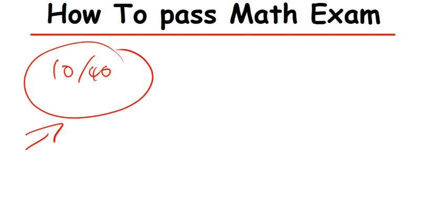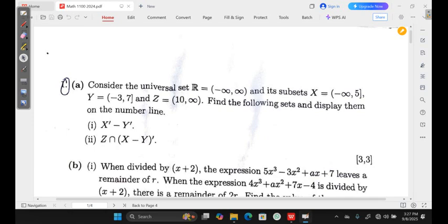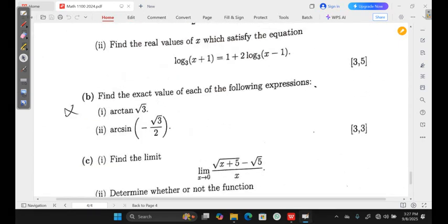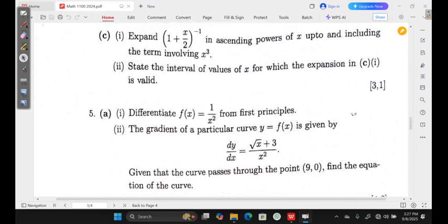I'm going to show you using an actual past year paper. Now, let's say you have a CA of 10 out of 40 and you are going into the exam — you are depressed, you feel like nothing is going to happen. But it is possible. So, using this paper from last year, the exam format is: you have 7 questions, you choose 5, and you leave 2.